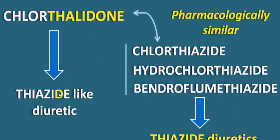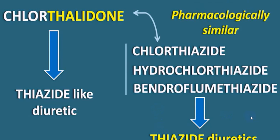Chlorthalidone is a thiazide-like diuretic but not a thiazide diuretic. Pharmacologically, it is almost similar to hydrochlorothiazide. Its chemical structure is described as 2-chloro-5-(1-hydroxy-3-oxo-1-isoindolinyl)benzenesulfonamide.